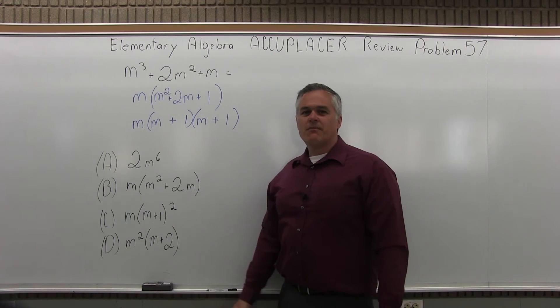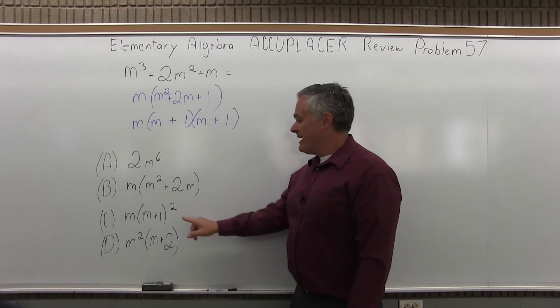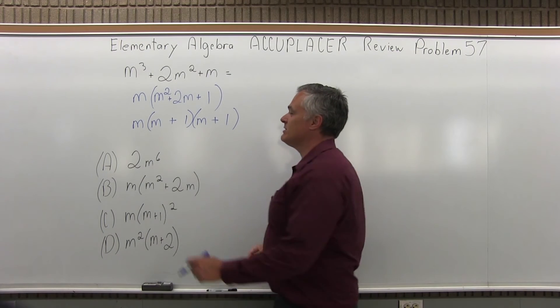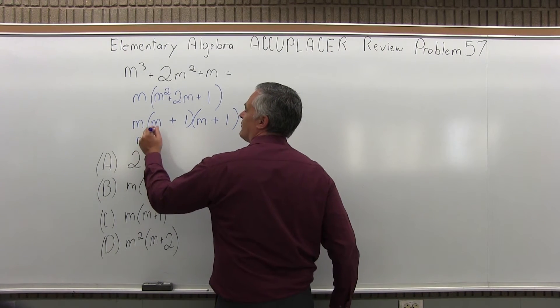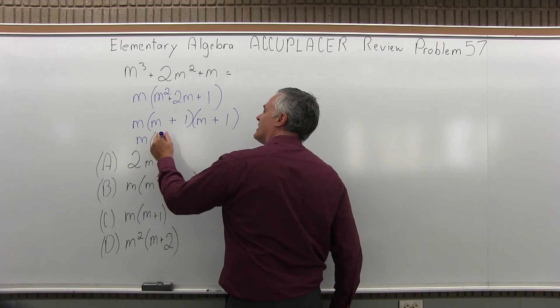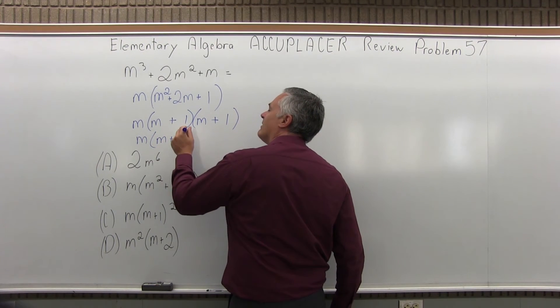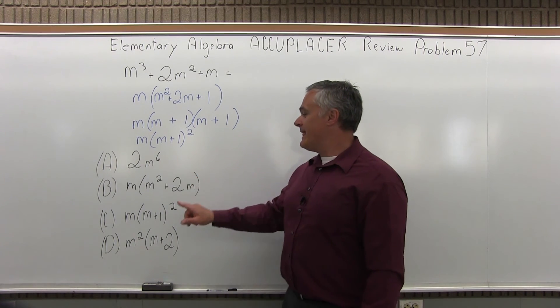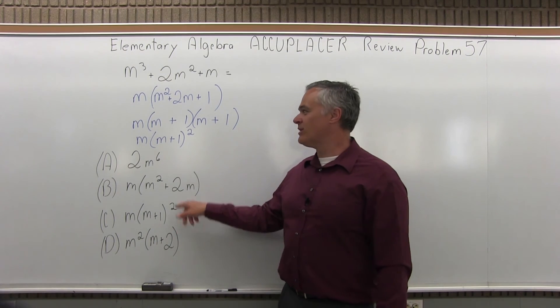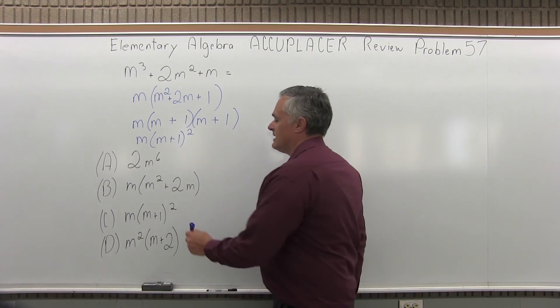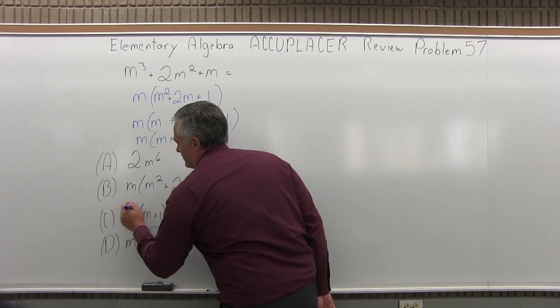But again, it doesn't match. But if I notice the m plus 1 in parentheses to the second power, that's the same as what I have. So let me just keep the m in front. And instead of writing m times 1 times itself again, I can just do m times m plus 1 second power on the m plus 1 in parentheses. Now it matches perfect for option C. So with a little bit of extra work, we can see our answer matches exactly with option C in this problem.